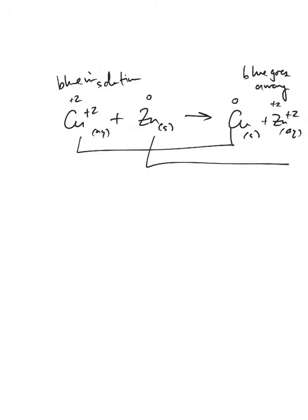So the copper, if it goes from plus two to zero, it means that it gained two electrons, and the zinc lost two electrons. So the copper is reduced, and it's the oxidizing agent. The zinc is oxidized, so it's the reducing agent. And there is that question.